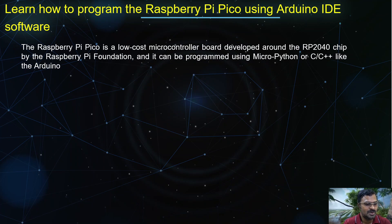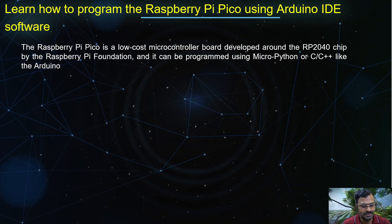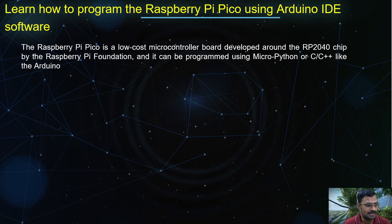This Raspberry Pi Pico is a low cost microcontroller board developed around the RP2040 chip by the Raspberry Pi Foundation. It can be programmed using MicroPython or C and C++, like the Arduino we are using conventionally.